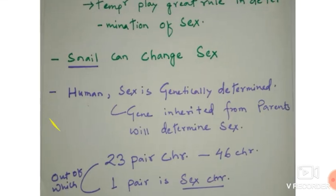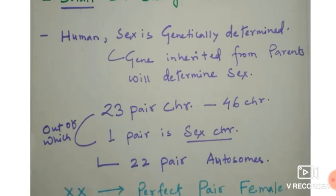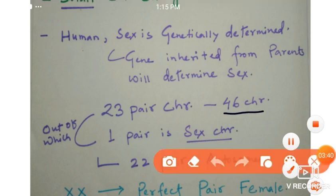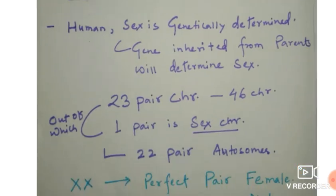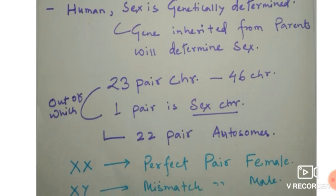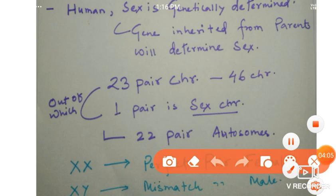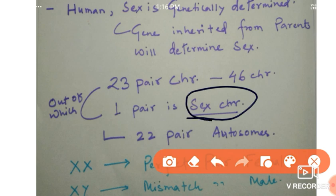There are 23 pairs of chromosomes in human beings, meaning 46 chromosomes in total. Out of these, 22 pairs are autosomes and one pair is sex chromosomes. These 22 pairs of autosomes will not decide whether the offspring will be male or female. The main element to determine male or female offspring in a human being is the sex chromosome — this is the game changer.